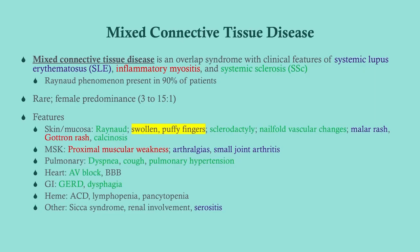Mixed connective tissue disease is an overlap syndrome. What happens is that you don't fit all the criteria for any of the other connective tissue disorders - rather, you take a little bit from each of them. With MCTD, you specifically see features of lupus, inflammatory myositis (usually polymyositis, possibly dermatomyositis), and systemic sclerosis. So you've got features of all three of these.